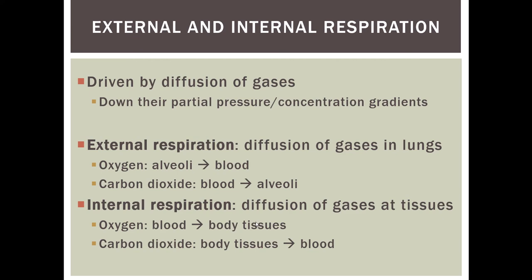Carbon dioxide, which came from our body tissues carried in the blood, is moving out of the blood into the alveoli so it can move up the respiratory tract and be exhaled out of the body. Internal respiration involves the systemic circuit.